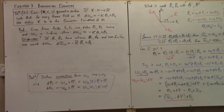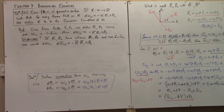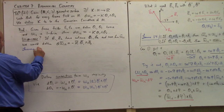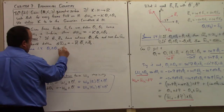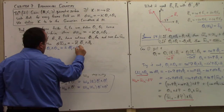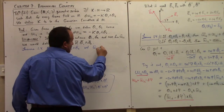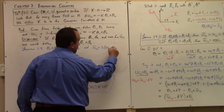We just had lemma 1.4. Let me restate lemma 1.4 using plus-minus notation. It said theta 1 wedge theta 2 equals plus-minus theta bar 1 wedge theta bar 2, and omega bar 1,2 equals plus-minus omega 1,2 plus D phi.